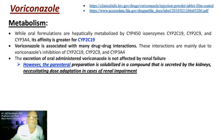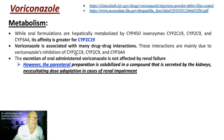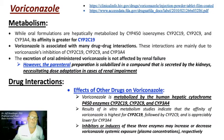With respect to voriconazole metabolism, cytochrome P450 enzymes act on this drug — in particular CYP2C19. Thus, there are many drug-drug interactions mainly due to this compound's ability to inhibit these important drug-metabolizing enzymes. Many other drugs also have a huge effect on voriconazole levels, resulting in serious drug interactions.